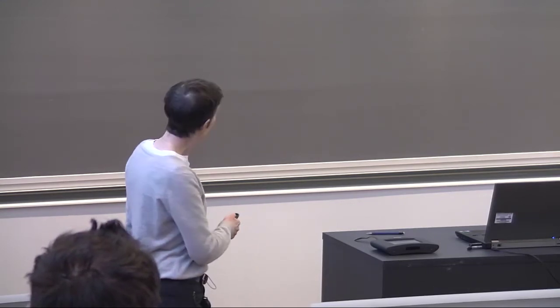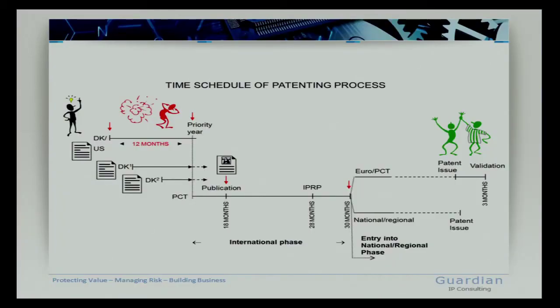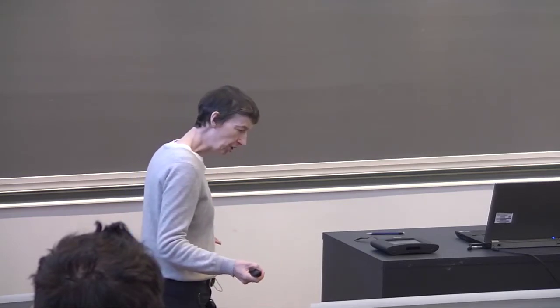And then hopefully at about this date here you will get an international preliminary opinion on patentability. In between, you have the possibility of amending your patent claims and the dream scenario is you exit here with a report from WIPO saying claims 1 to 18 are novel and inventive and have industrial application. At that moment you can go to your board of directors, your bank, your licensee and say, look, this has a reasonable expectation of being patentable. Put your money into it. It's a great business.